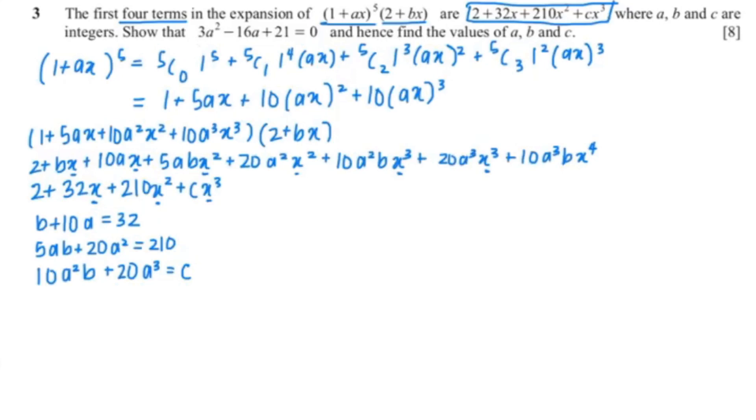So now we're going to answer the part of the question where they tell us to show that 3a² minus 16a plus 21 equals 0. So what I'm going to do right now is just make b the subject so that's 32 minus 10a, then I'm going to substitute it into this equation.